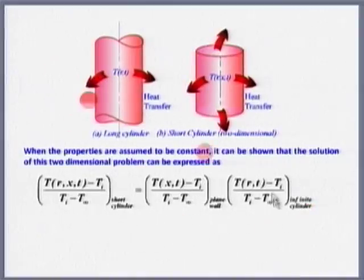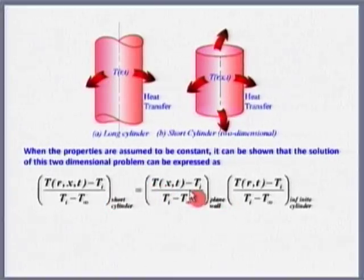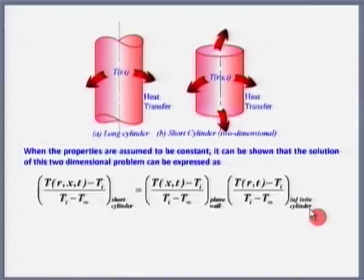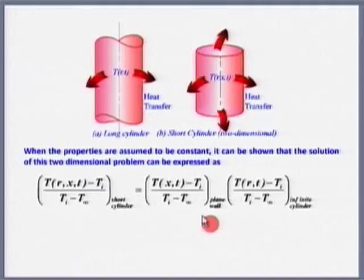How do we know it is always a product? It can actually be proved, and most of the time it has been found that the product works. Sometimes it can be a quotient or summation, but for the intersection of a plane wall and infinite cylinder, multiplying the products gives the same result as the short cylinder solution. That is how these solutions have been generated — always going from simple to complex.